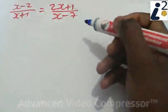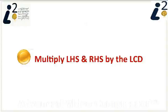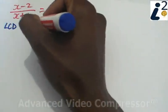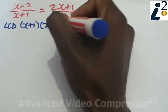To solve an equation with fractions we have to find the LCD. In this question the LCD is x plus 1 and x minus 7.